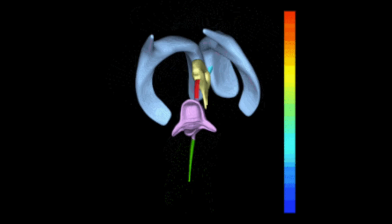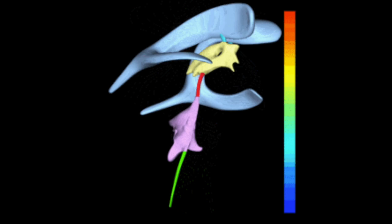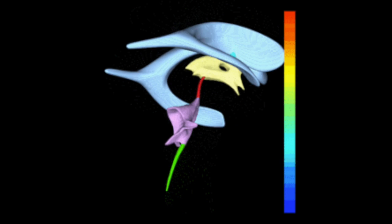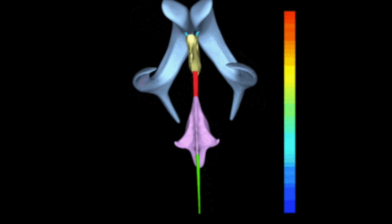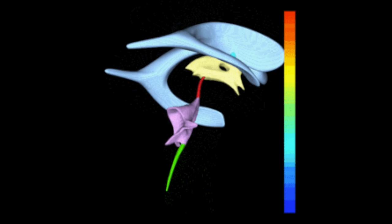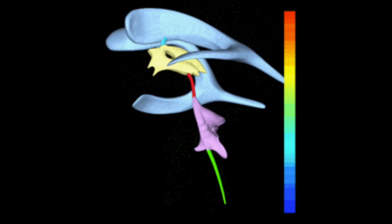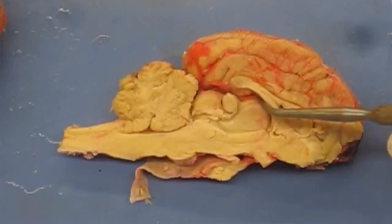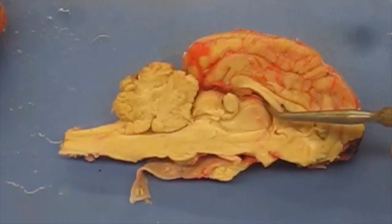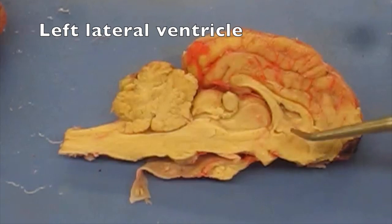The left and right lateral ventricles are shown here in grayish-blue, the third ventricle in yellow, the fourth ventricle in purple, and in green is the central canal of the spinal cord. The ventricles produce and circulate cerebrospinal fluid, which can be seen in this MRI. Again, the third ventricle, and also visible is the left lateral ventricle.